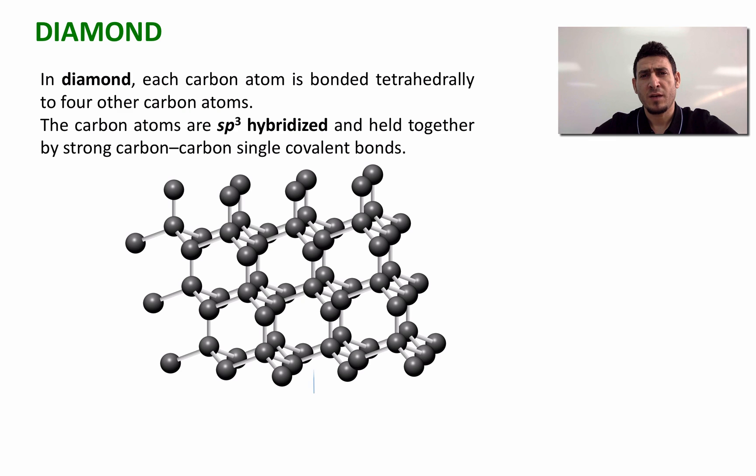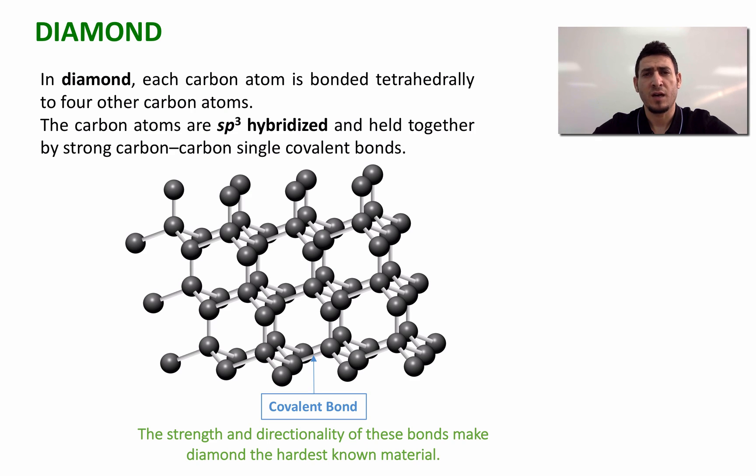The different carbon atoms in diamond are connected together by directional covalent bonds. The strength of these directional covalent bonds makes diamond the hardest material known, and this is confirmed by the very high melting point, which is around 3550 degrees Celsius.